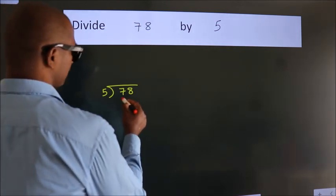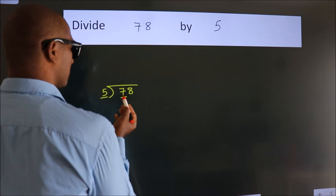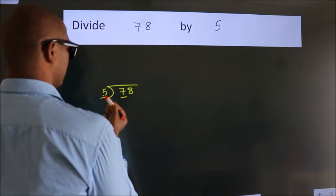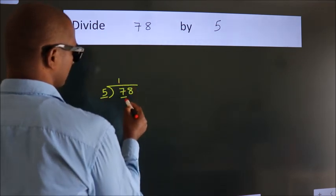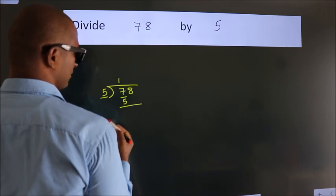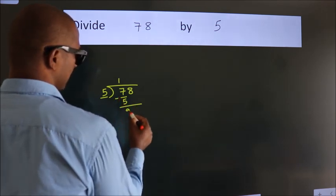Here we have 7. Here 5. A number close to 7 in the 5 table is 5 once 5. Now we subtract. We get 2.